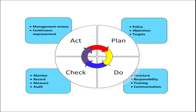Now learners, look at the chart shown before you. The circle has been divided into four parts, starting with the Plan block, which has three components: policy, objectives and aims, and targets. The Do block has four components: structure, responsibility, training to hone and polish skills, and communication, which is extremely important during work.